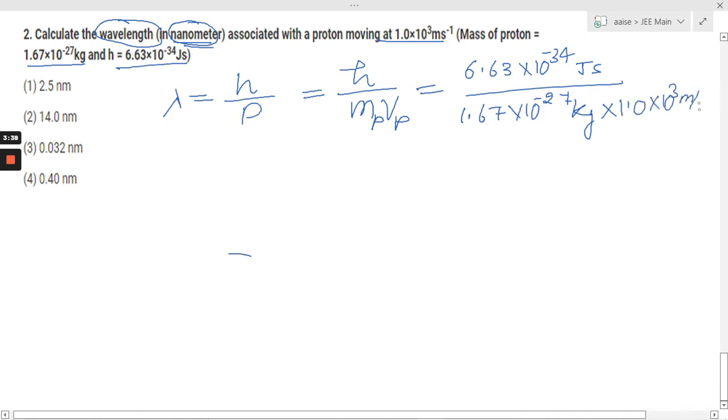meters per second. After solving it, we get 3.97 × 10⁻¹⁰ meters. Further, if we simplify it, it's going